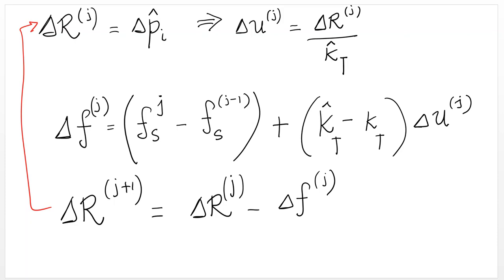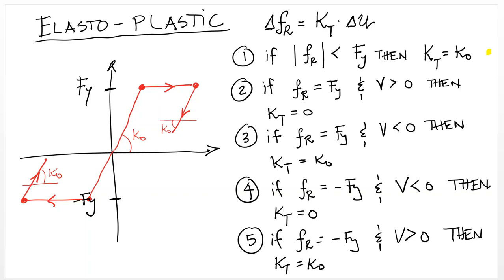There are different kinds of nonlinear models that one can establish. The easiest one is the elastoplastic model. And I have here the five steps that define that curve. They basically have to do with the level of force that you have and the velocity. So if you're less than Fy, you're going to be linear and then you don't need to iterate. But once you get to the plateau...